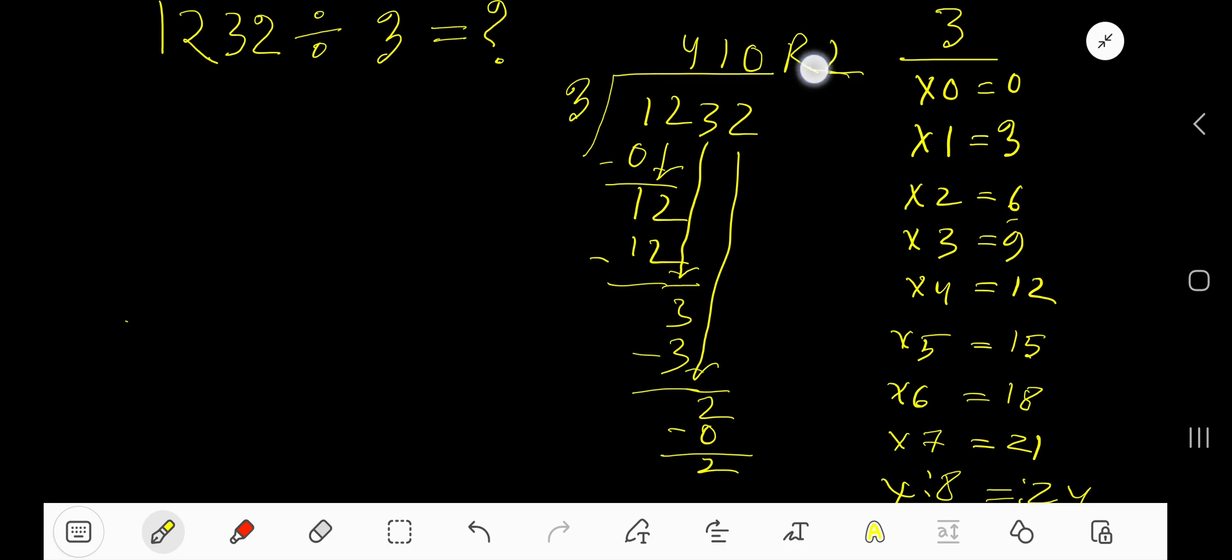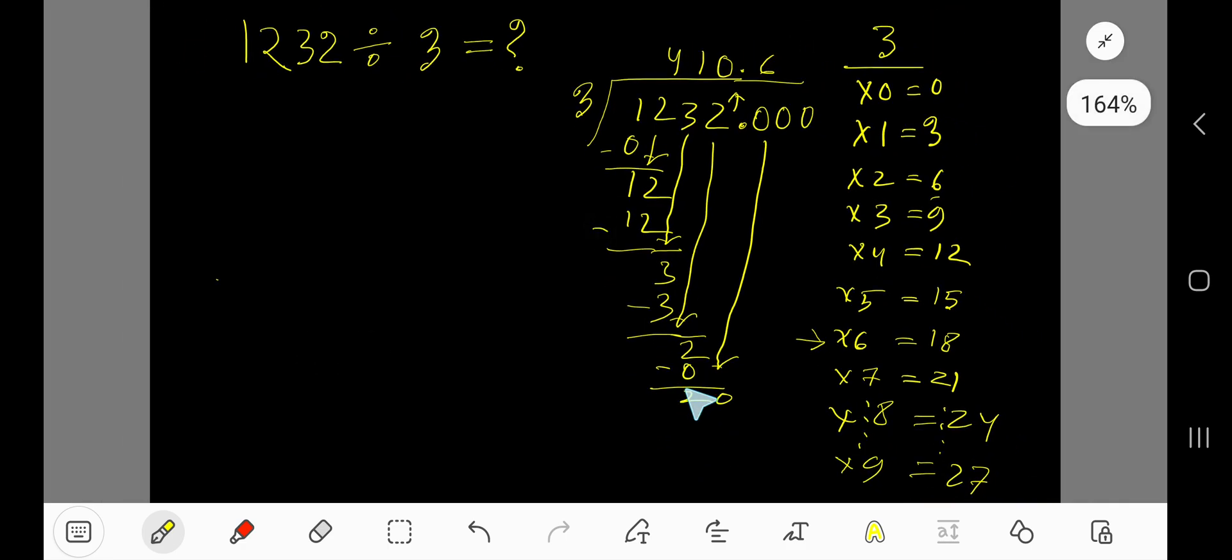If you want to write your answer in decimal form, just take decimal, add zeros. Bring down the first zero. So 20. 3 goes into 20 how many times? Again, 6 times. 6 times 3 gives you 18. Subtract 2.